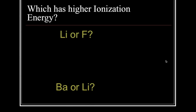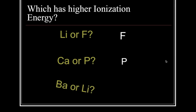Which ionization energy is larger? Lithium vs. fluorine — lithium is all the way to the left and fluorine is all the way to the right, so fluorine wins. Calcium vs. phosphorus — calcium is to the left and phosphorus is to the right, so phosphorus wins. Barium vs. lithium — lithium is on top and barium is on the bottom, so lithium would win.